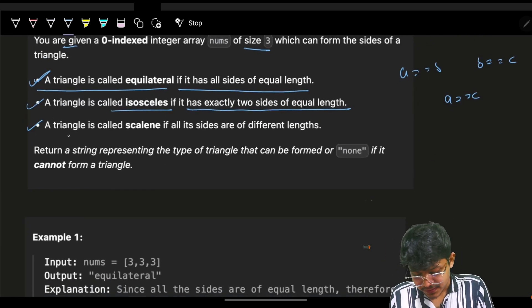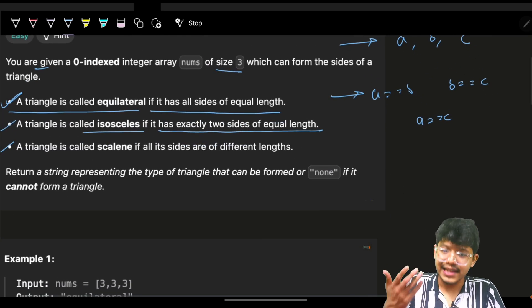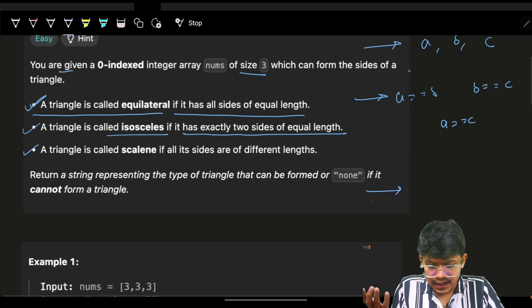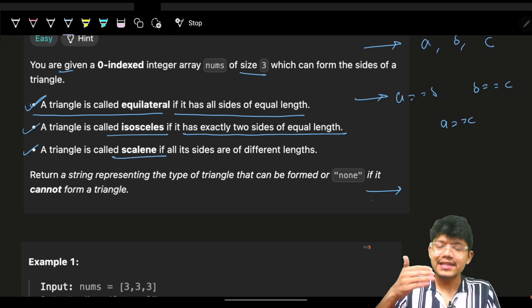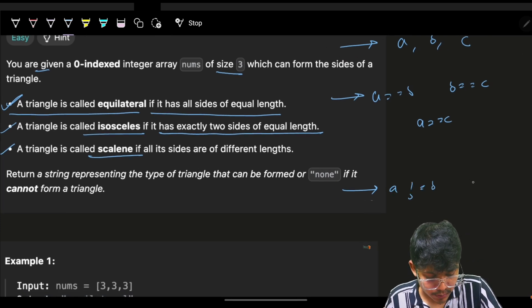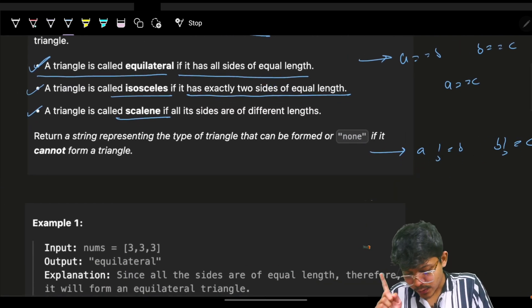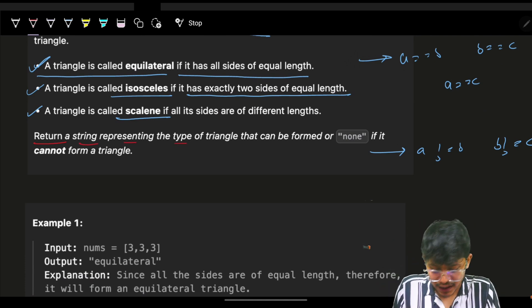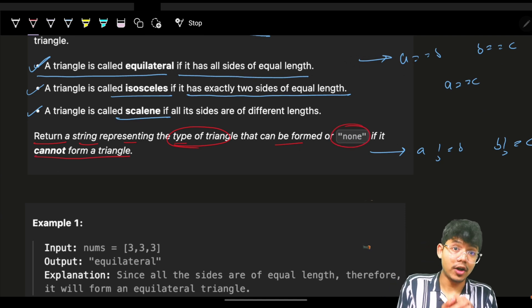Now third condition is that if all sides are different, this was all same, this was scalene. If all three are different, which means it is neither equilateral nor isosceles, it is actually scalene, which means A is not equals to B and B is not equals to C. Then it's your scalene. Now it just says one thing in last, return a string representing the type of triangle that can be formed or none if it cannot form a triangle.